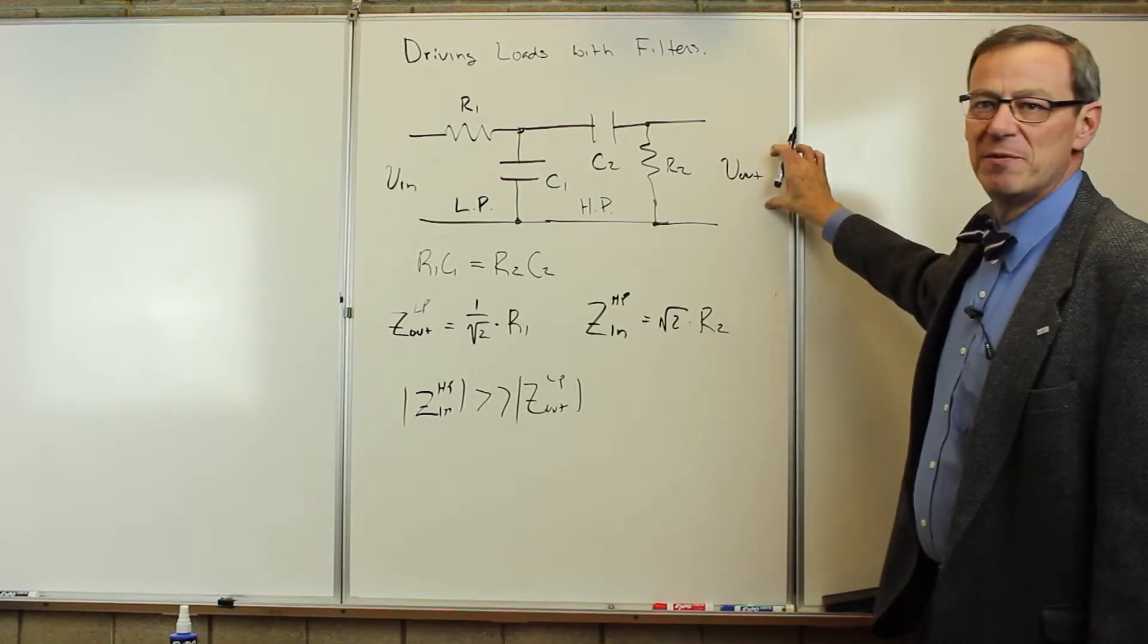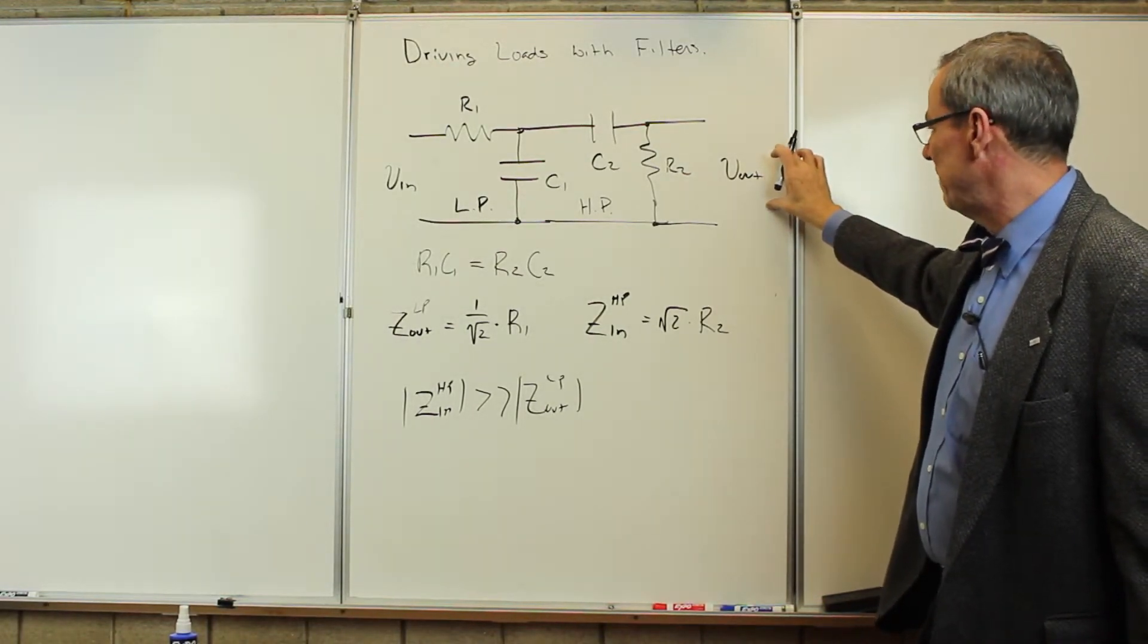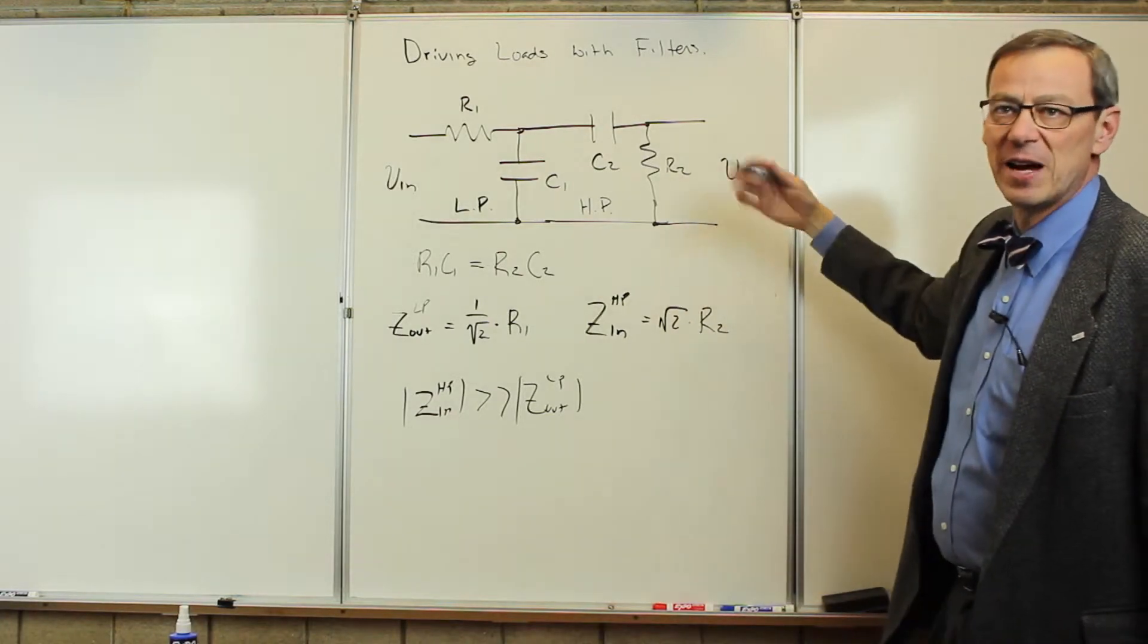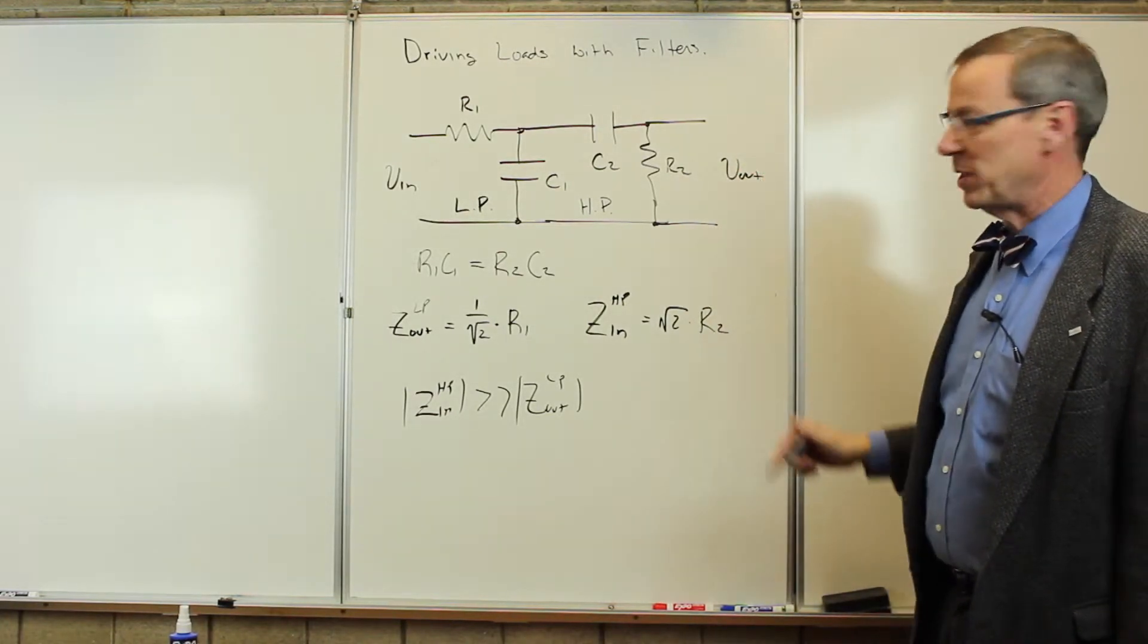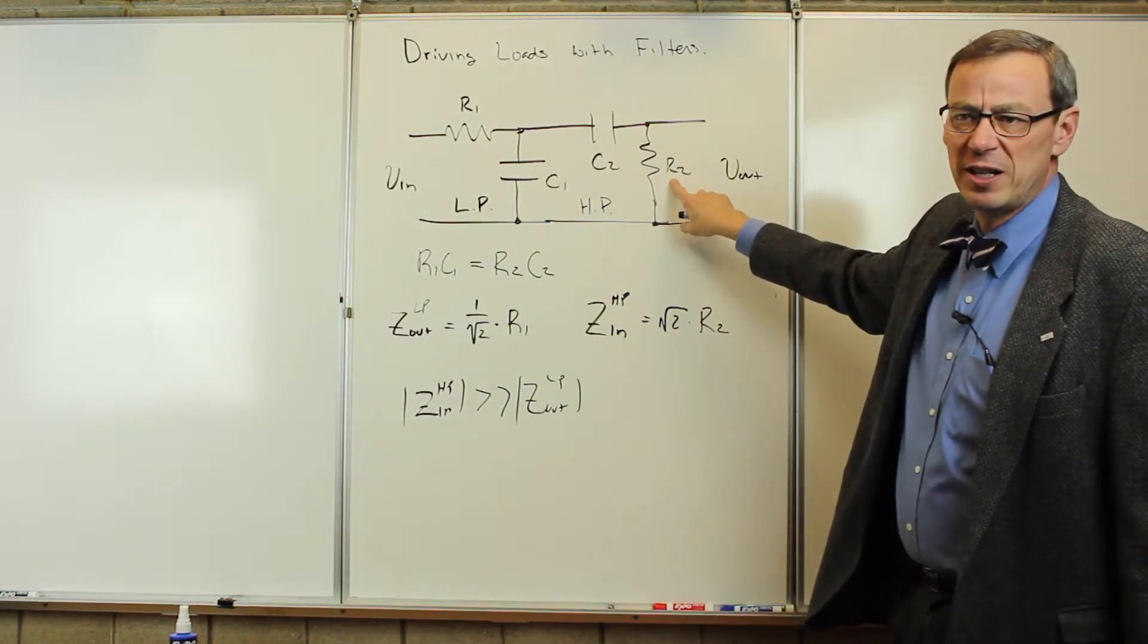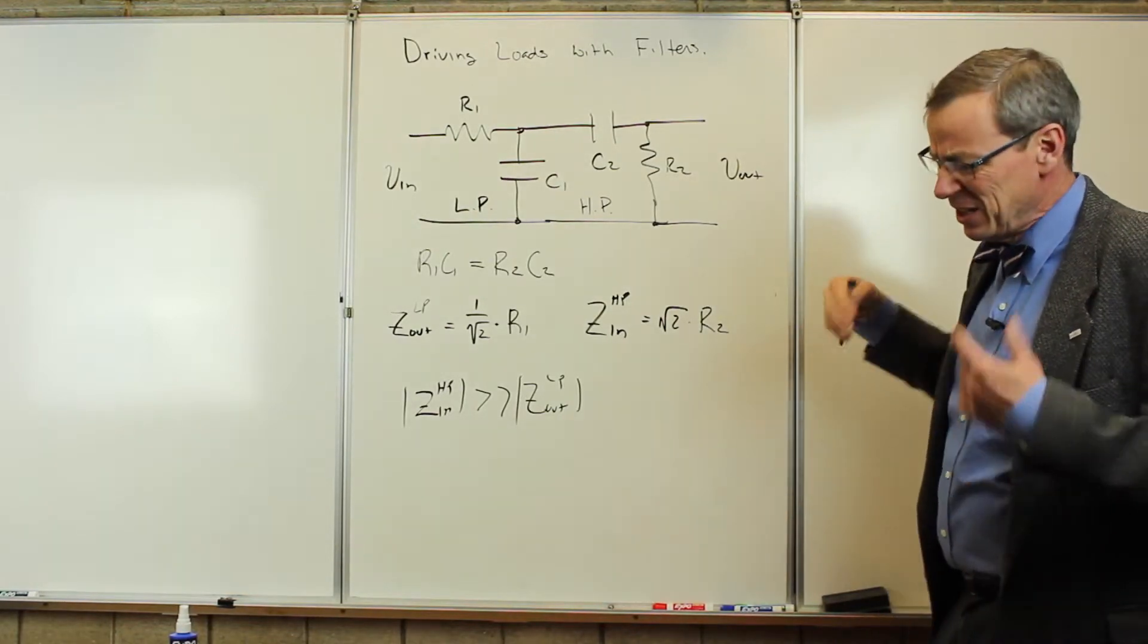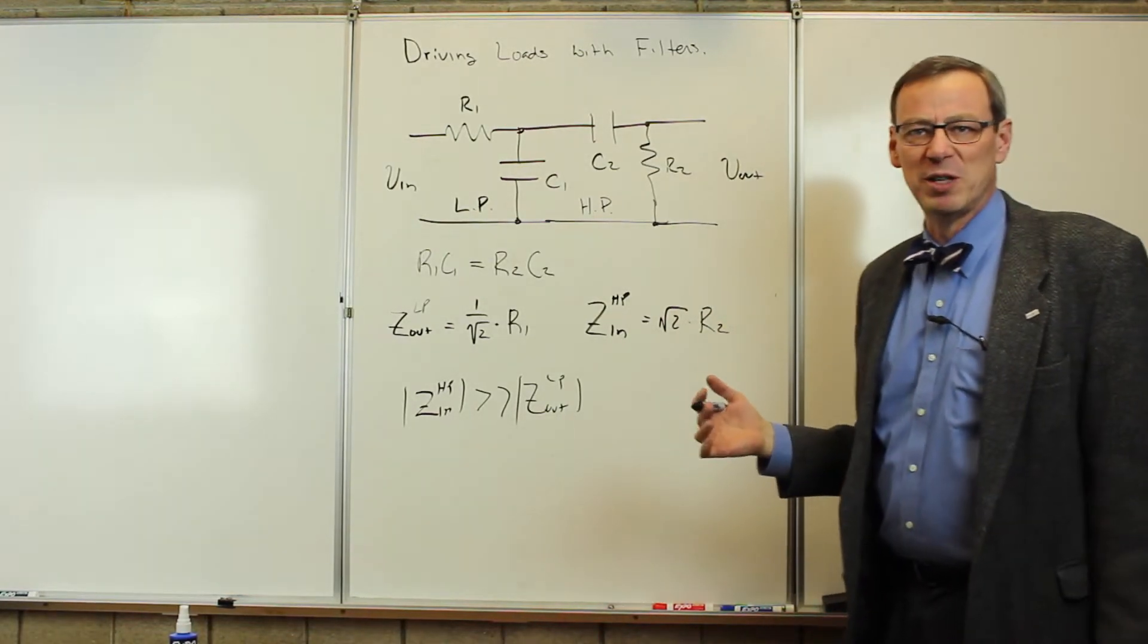If we then want to drive some load with this, say some other load, we have to choose that even bigger than this R2, so another factor of say 50 or something. So, if we have a kilo-ohm resistor here, we have a 50 kilo-ohm resistor here, we go to another factor of 50, 2.5 mega-ohms. That starts to be a little bit of a problem when we're trying to drive things.